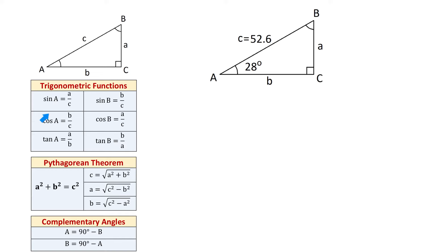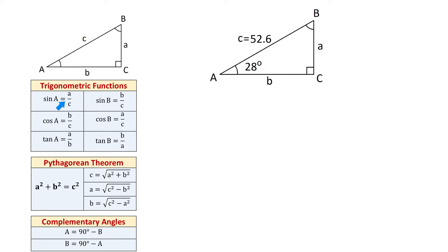Cosine of angle A equals the adjacent side B divided by hypotenuse C. Cosine of angle B equals the adjacent side A divided by hypotenuse C, and tangent of angle B equals the opposite side B divided by the adjacent side A. In any of these trigonometric functions, we work with one angle and two sides.